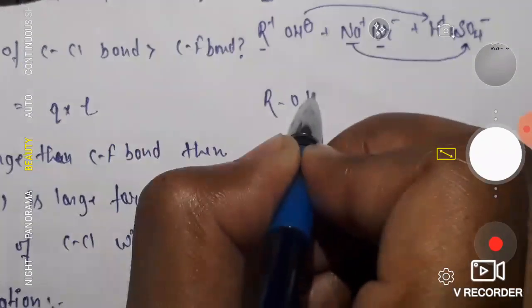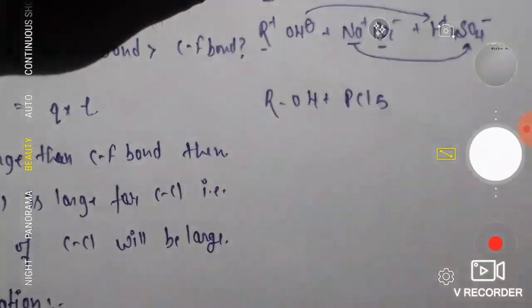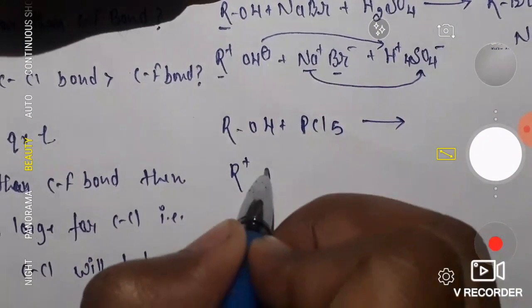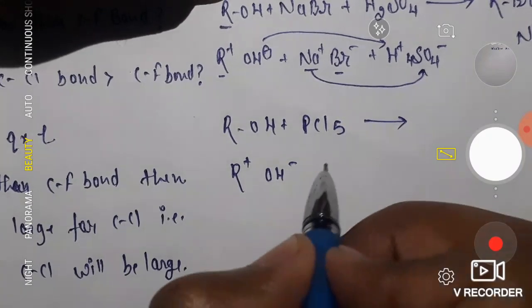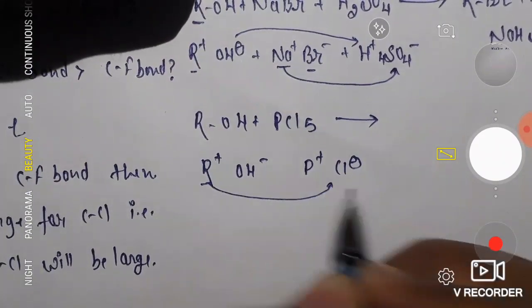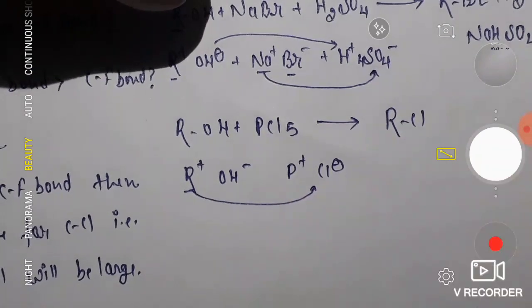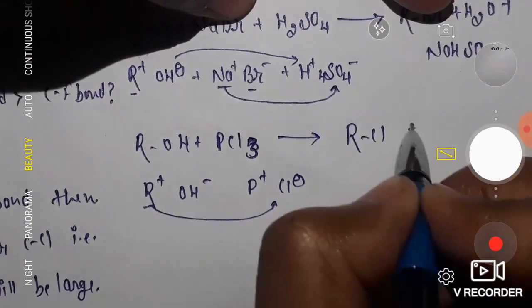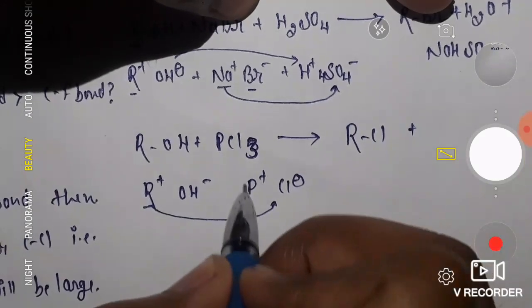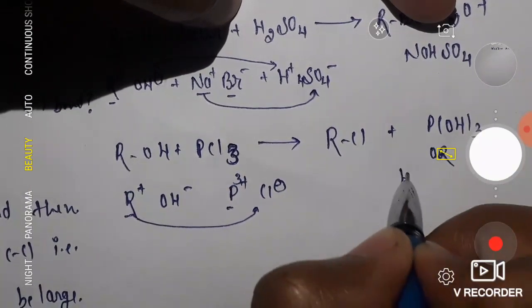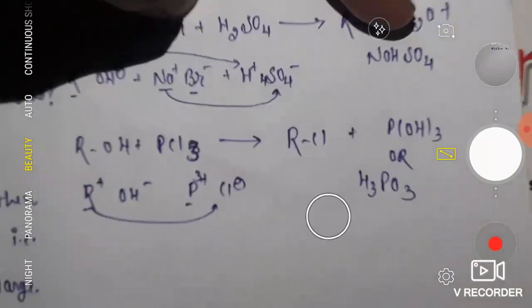Next method: ROH plus PCl₅ (or PCl₃). For PCl₃: R⁺ combines with Cl⁻ to give RCl, and OH combines with P (which carries 3+ charge) to give P(OH)₃ or H₃PO₃ — both are correct. For PCl₅, the product is RCl plus HCl plus POCl₃.